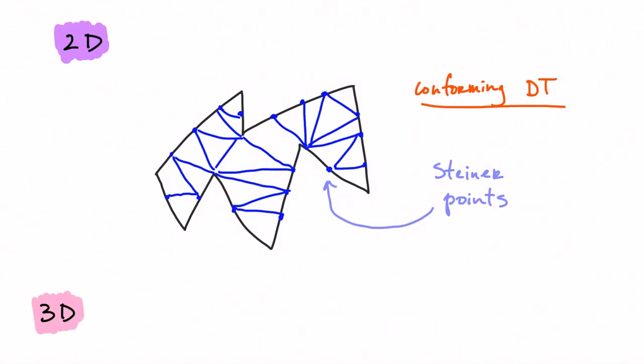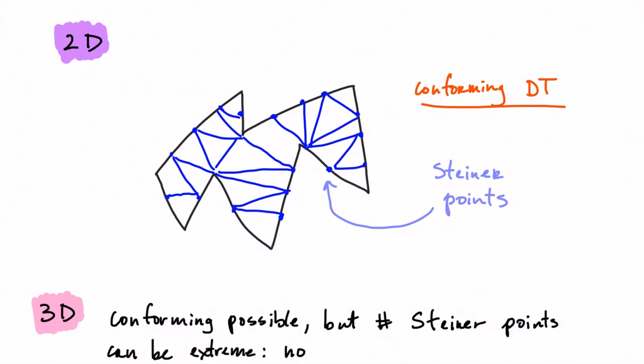In 3D, this can be done but the problem is that in practice, very many extra vertices will be added. For cases where two planes are nearly coplanar, there actually do not exist algorithms to bound the number of vertices that will be inserted by a polynomial.